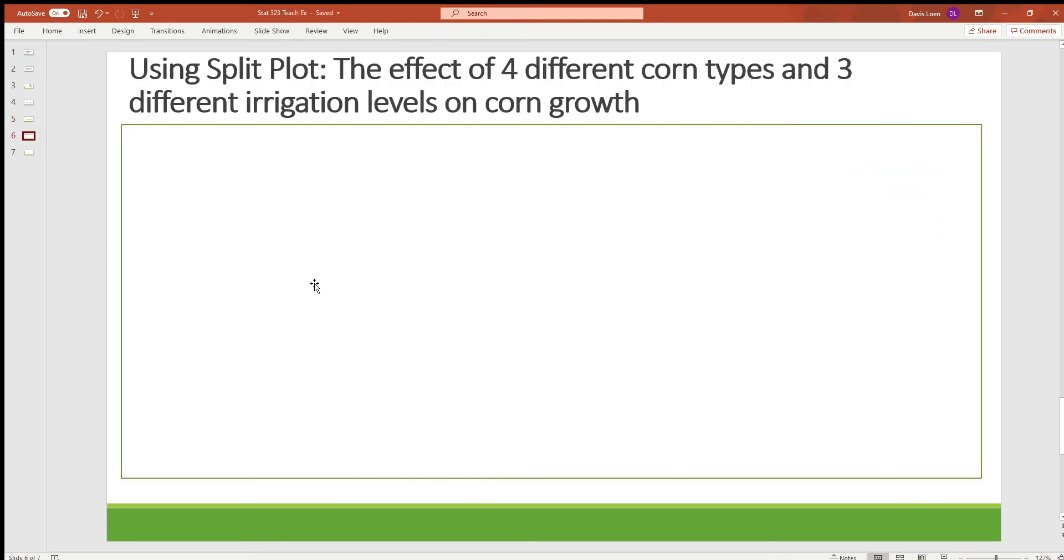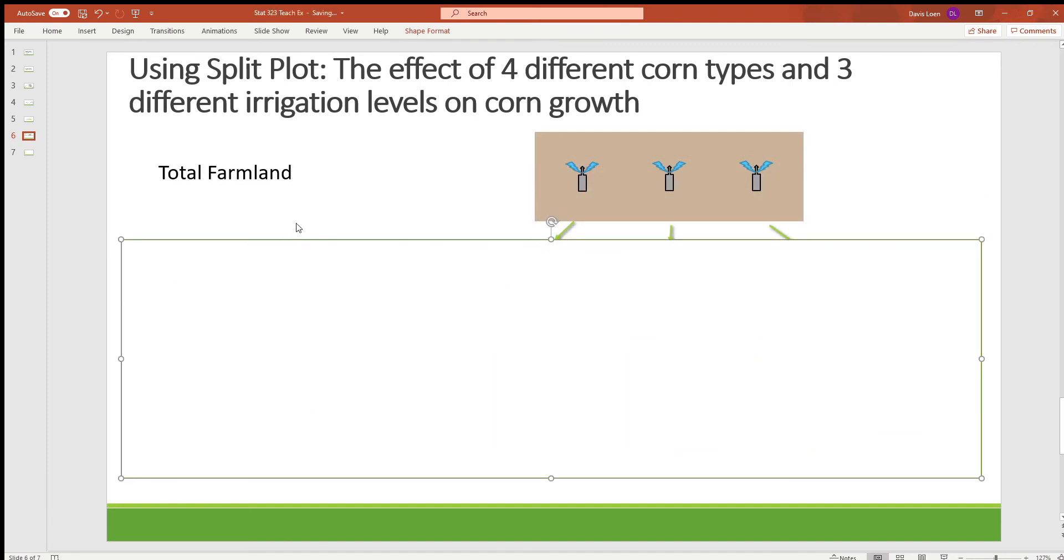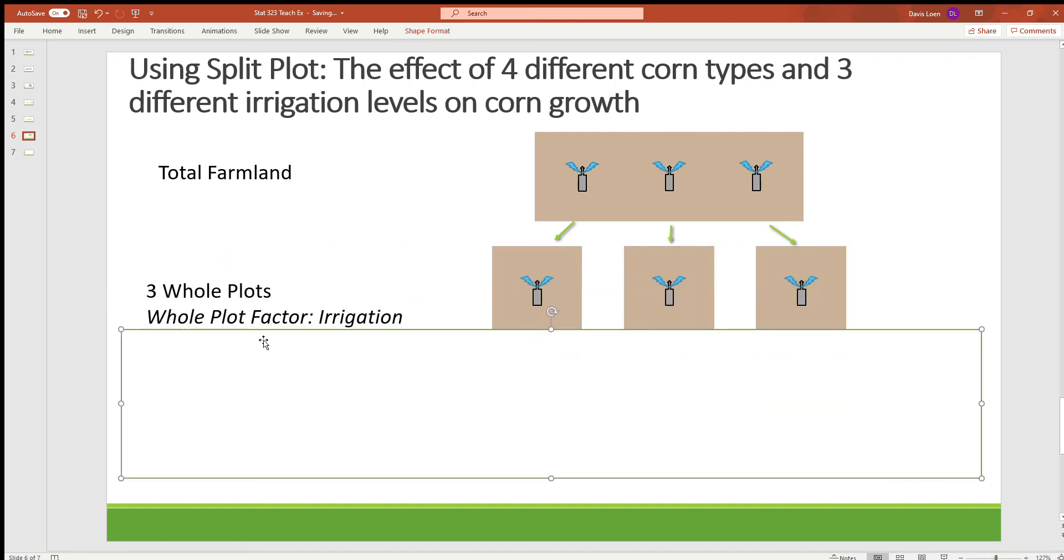So in this particular example we have our total farmland, which how convenient that it has three sprinklers, is broken up into three whole plots. And the whole plot factor for these plots is the level of irrigation, and that is controlled using the three sprinklers that we have, one for each whole plot that we have in this experiment.